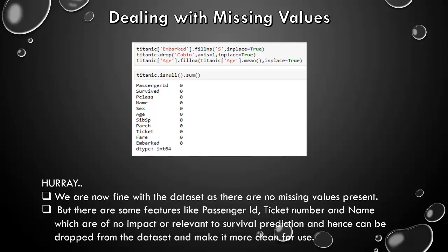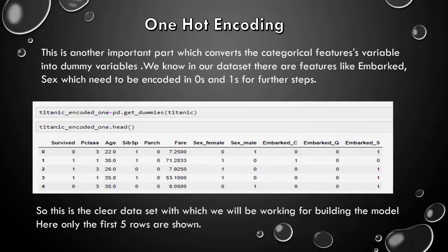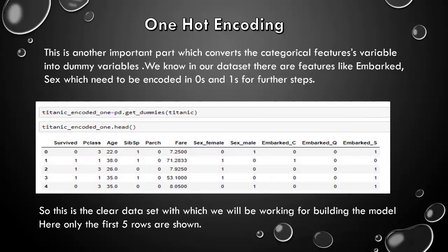Hooray! We are now fine with the dataset as there are no missing values present. But there are some features like passenger ID, ticket number and name which are of no impact or relevance to survival prediction and hence can be dropped from the dataset and make it more clean for use. One-hot encoding. This is another important part which converts the categorical features variables into dummy variables. We know in our dataset there are features like embarked, sex which need to be encoded in 0s and 1s for further steps. So we did it. So this is a clean dataset with which we will be working for building the model. Here, only the first 5 rows are shown.